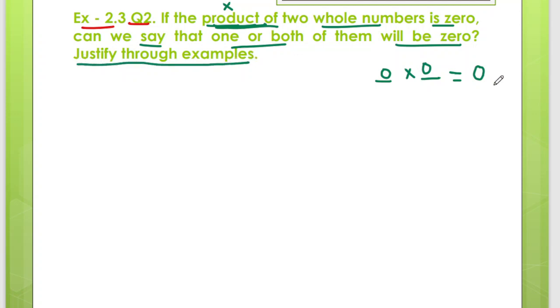We have to justify through examples. Is this right? We have to tell first. And if we are saying yes, then we have to give justification on what basis we are saying yes. And if you are saying no, then also you have to say on what basis. You have to justify using examples.